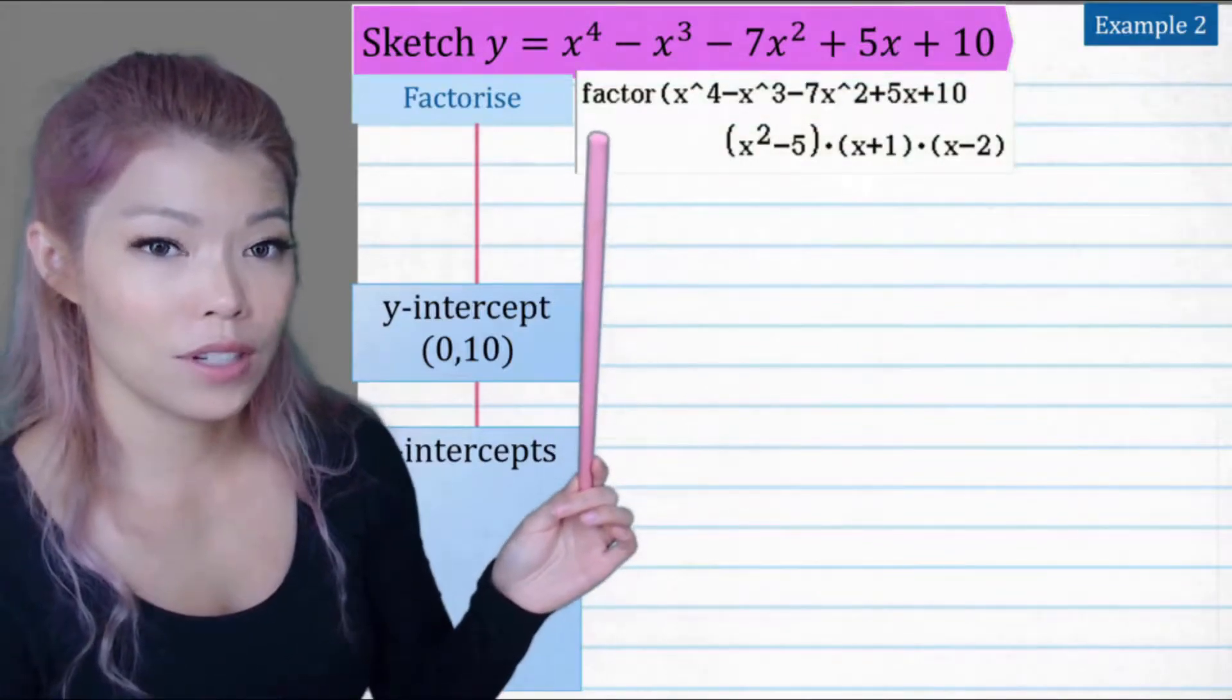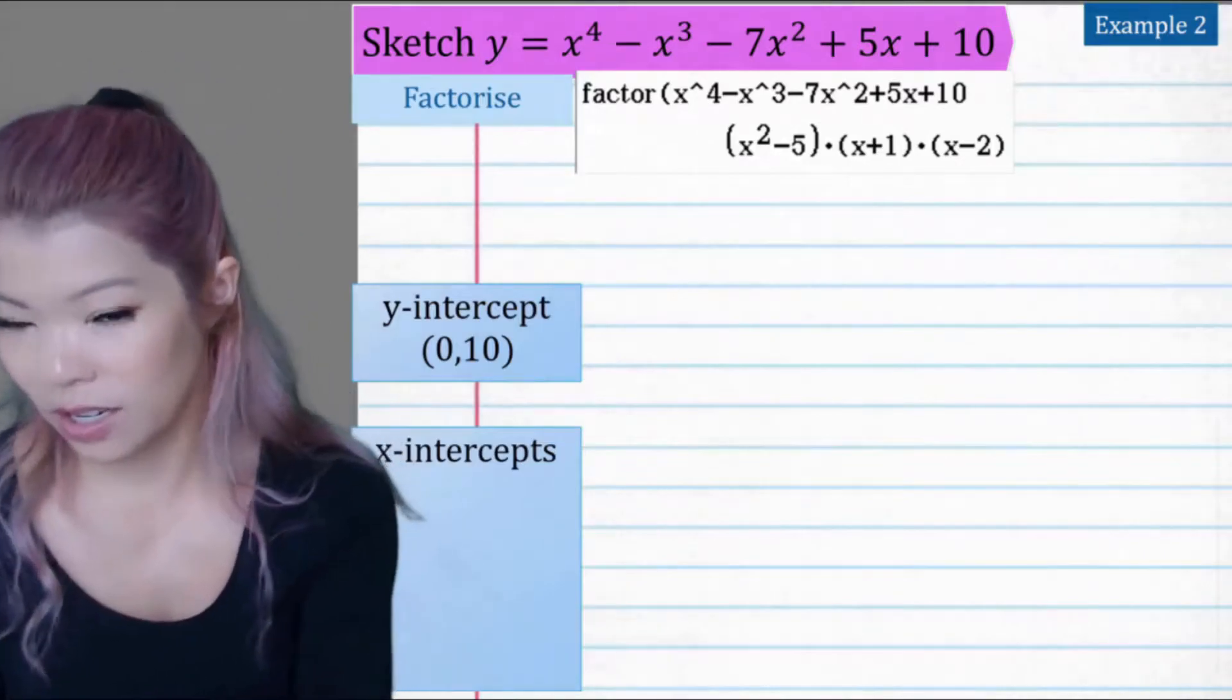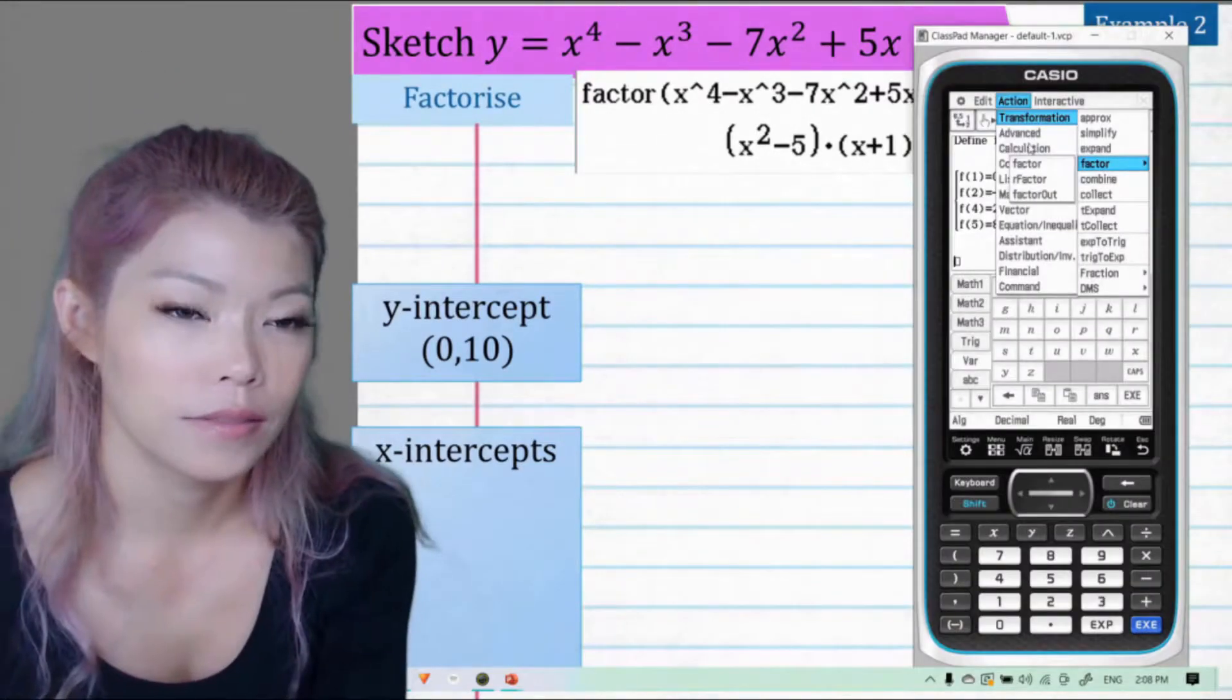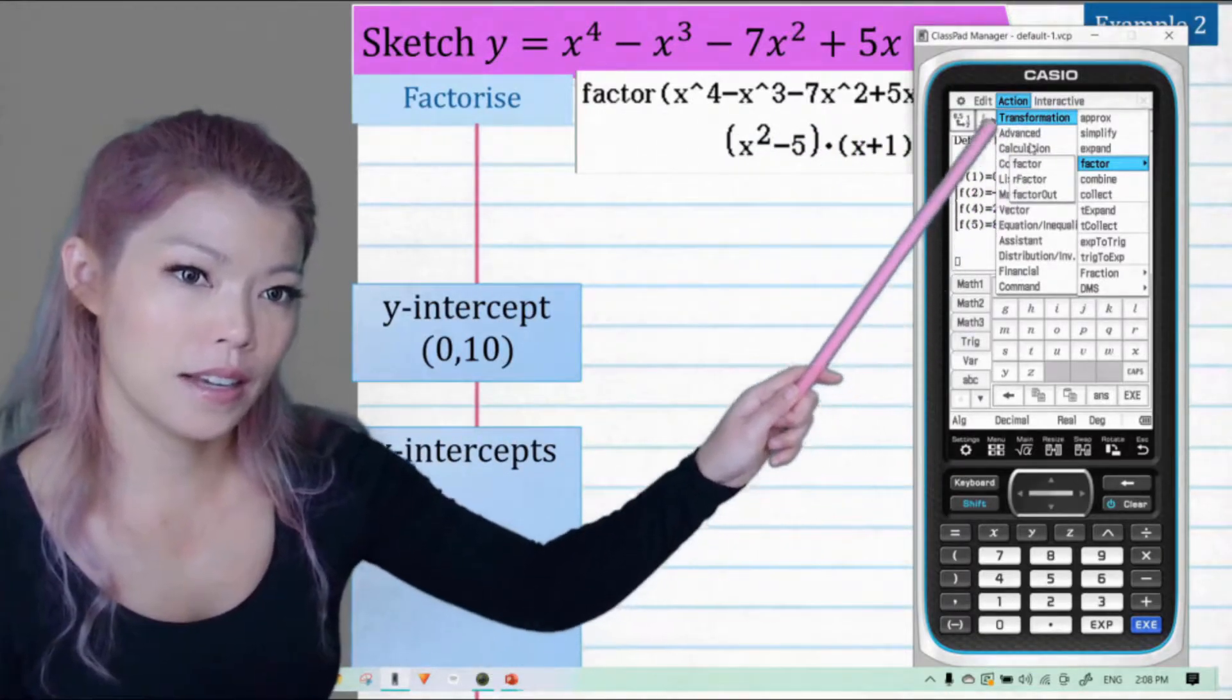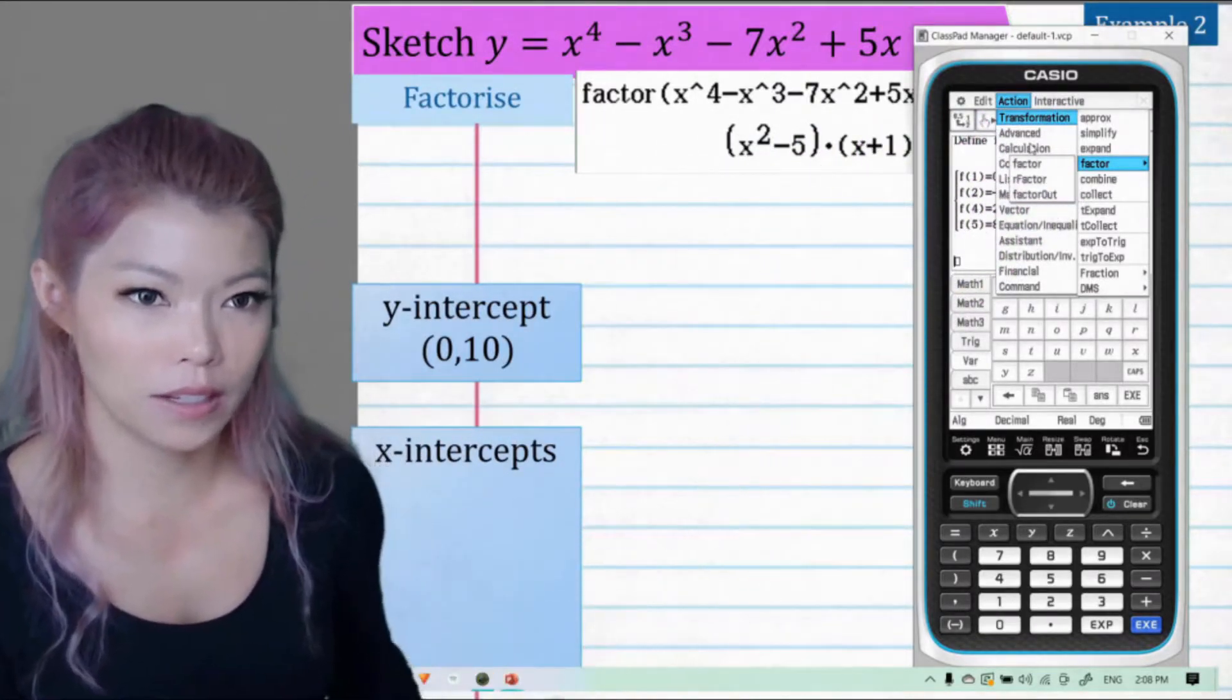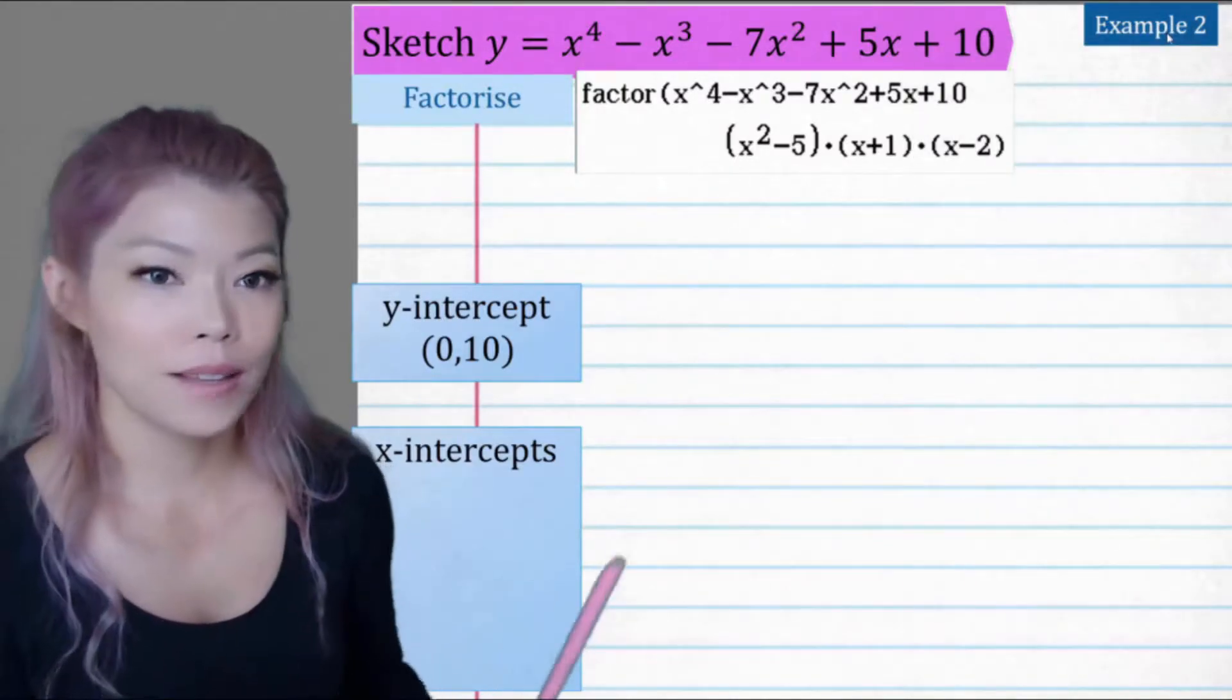Now using the CAS, if you've forgotten, it's just a factor in action, which I'll just show you really quickly. So you would use the calculator to factor, and this is a sequence of buttons you'd press and type in your equation. So you'll get something that looks like that.